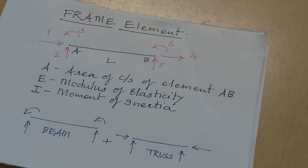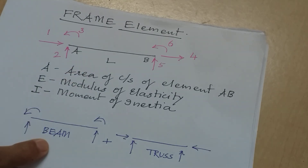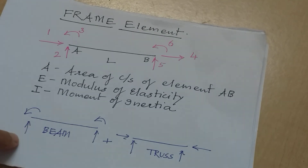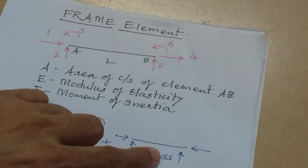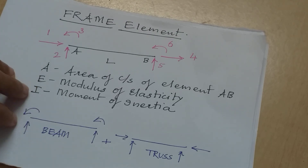The size of the stiffness matrix for the frame element is 6 by 6, because the size of the stiffness matrix equals the degree of kinematic indeterminacy of the element. Since the frame element has 6 degrees of kinematic indeterminacy, the stiffness matrix is 6×6. The stiffness matrices for the beam element and truss element were each 4×4, since their degrees of kinematic indeterminacy were 4.